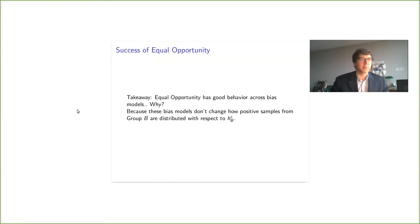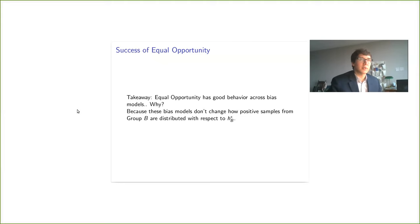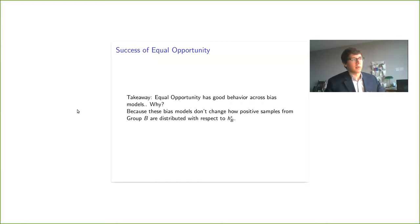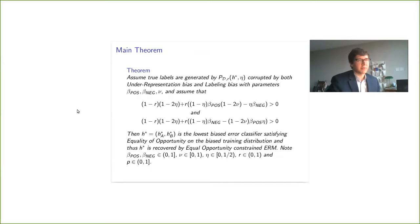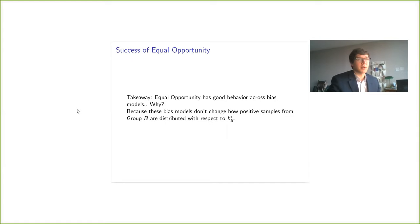The summary of this part of the talk is that equal opportunity has nice behavior across our bias models. These bias models don't really change how positive samples from group B are distributed with respect to H_B* — they sort of include more negatives and there are fewer positive samples, so they may get washed out by negatives. But the fact that there are more positives above H* and fewer below is unchanged. I'm basically always thinking of H* as a hyperplane.